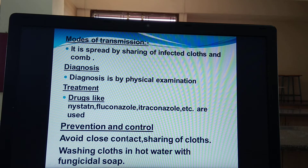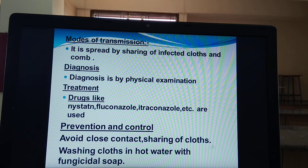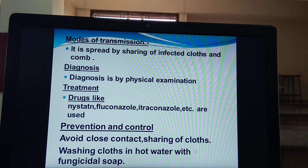How to prevent ringworm? As we know the mode of transmission, prevention and control is easy. That is to avoid close contact, avoid sharing of clothes, and washing clothes in hot water with fungicidal soap is also one of the preventive measures. So avoid close contact, avoid sharing of clothes, and use fungicidal soap to prevent this disease.